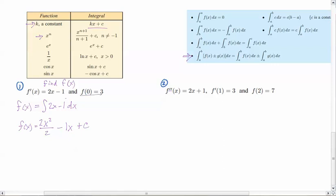So now it gives me a second piece of information. It says at f of 0, it's equal to 3. And so I'm going to just simplify my function really quick. So I'm going to cancel out the 2's, which will leave me with x squared minus x plus c. I'm going to go ahead and put 0 in for x, because that's f of x.